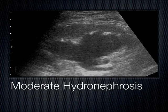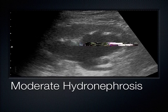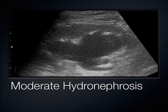With a lot of hydronephrosis backing up in the kidney, the cortex starts to go away and those finger-like projections coalesce into one. We can still make out cortex here. If all I saw was a big black center with no cortex left, that would be severe hydronephrosis. The fact that I can still make out cortex tells me this is probably moderate.